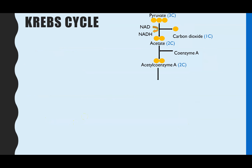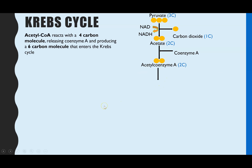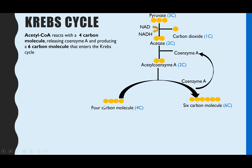Now the Krebs cycle — the first step is that acetyl coenzyme A reacts with a four-carbon molecule to create a six-carbon molecule, because we're adding four and two. In doing that, the coenzyme A — whose purpose was purely to bring the acetate into the cycle — is released and can be reused in the link reaction.